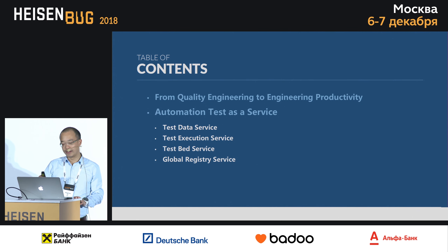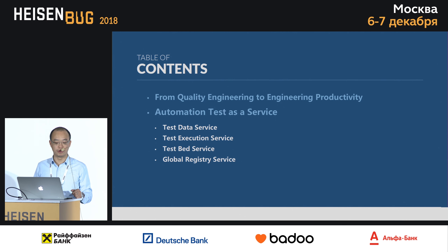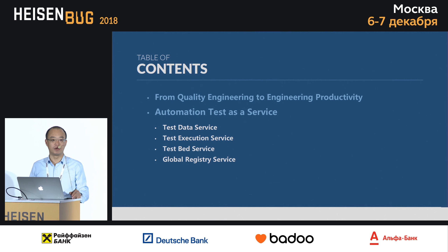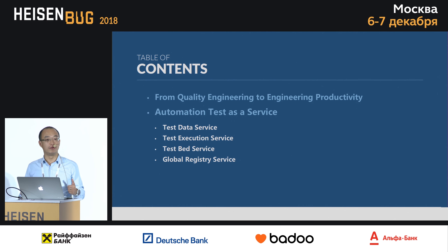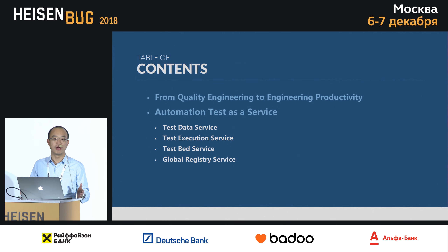We have two major topics in this session. First, we want to talk about the shift from quality engineering to engineering productivity. This is very interesting - in a lot of big companies worldwide, including Google, Facebook, and eBay, they no longer have purely manual QE roles. A lot of testing is done by developers themselves. The concept of engineering productivity, which actually originated from Google, is becoming very important to support this model.